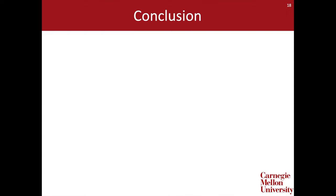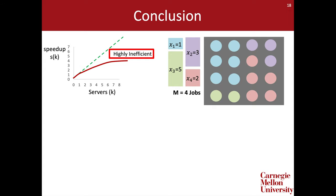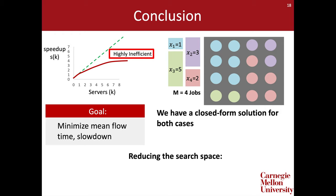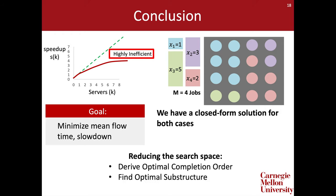To conclude, I've presented a model for server allocation for parallelizable jobs of known sizes. We had the dual goals of minimizing mean flow time and mean slowdown, and I presented closed forms for the optimal policies in both cases. To find these optimal policies, we reduced the search space by first proving that the optimal completion order was shortest job first and then deriving the scale-free property. I'm now happy to take any questions.